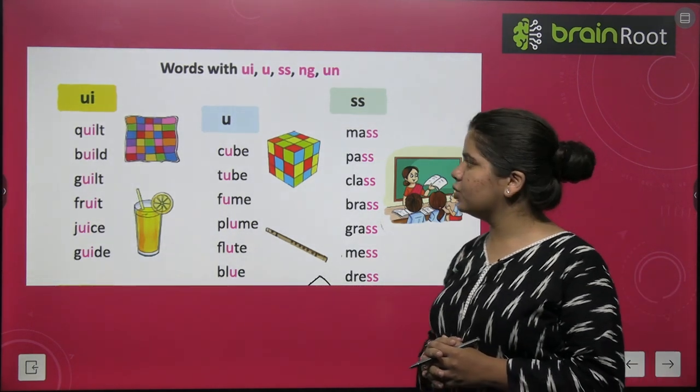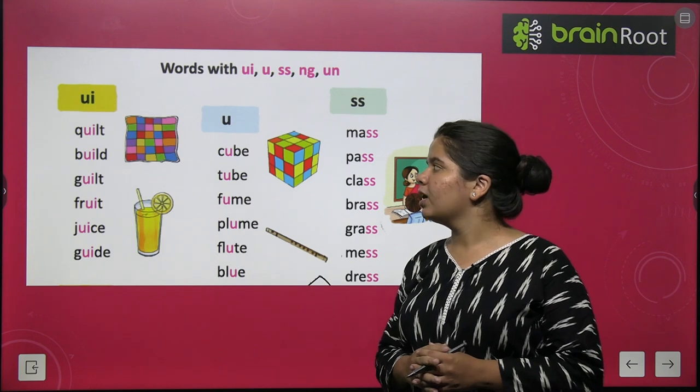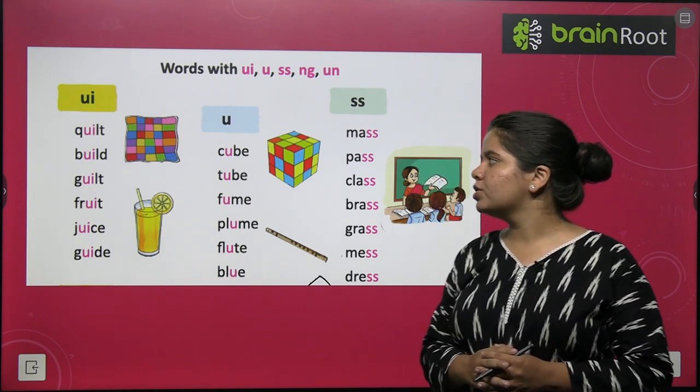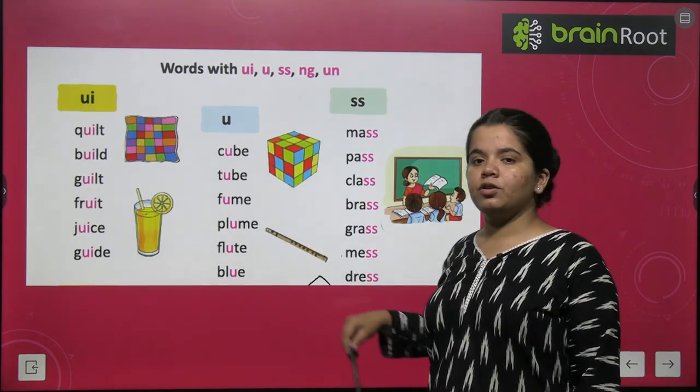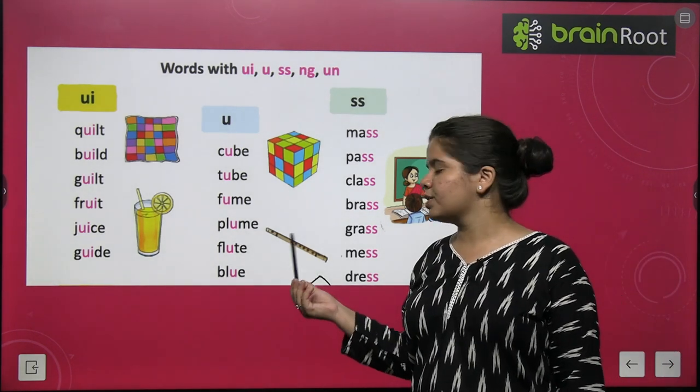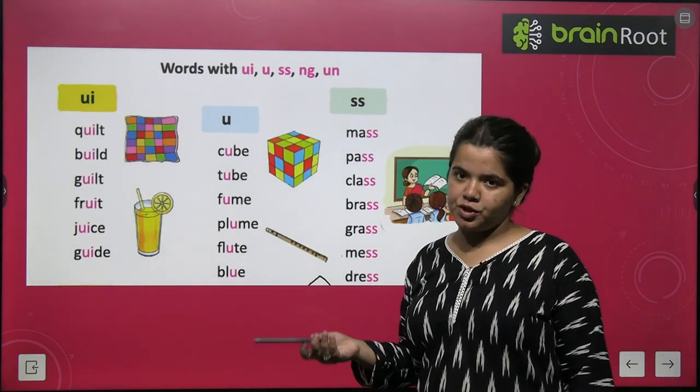Next is U words — words with the U sound: cube, tube, plume, flute, blue.